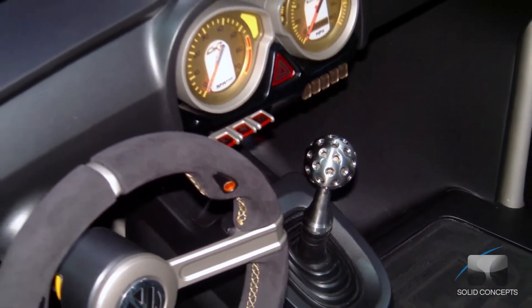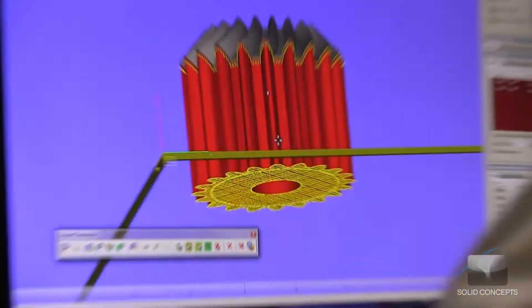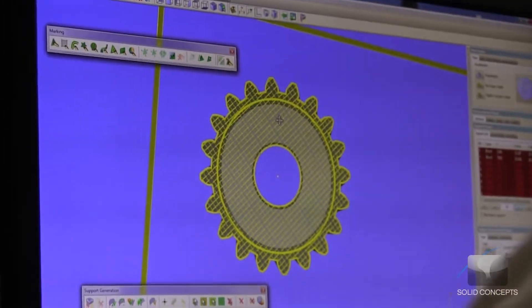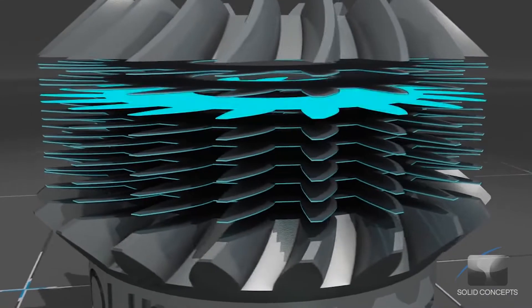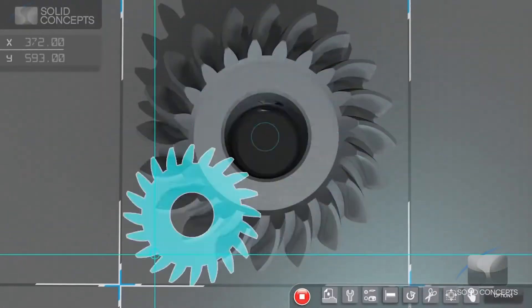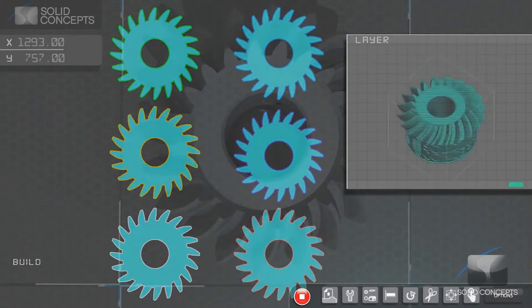The DMLS process begins in the same fashion as other layer additive manufacturing technologies. A program takes 3D CAD data and mathematically slices it into 2D cross sections. Each of these sections will act as a blueprint, telling the DMLS machine exactly where to sinter the metal material.